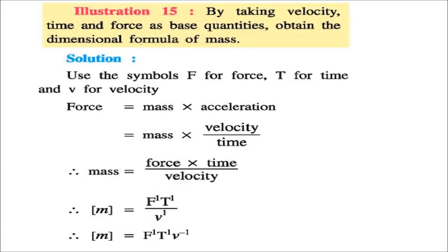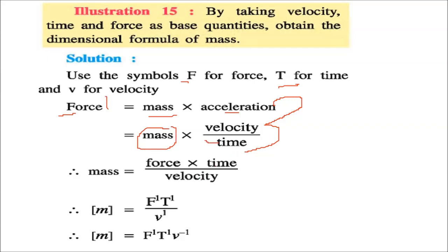Illustration 5: Taking velocity V, time T, and force F as base quantities, find the dimensional formula of mass. From F = Ma and a = V/T, mass M = F·T/V. So the dimensional formula of mass in this system is F¹ T¹ V⁻¹.